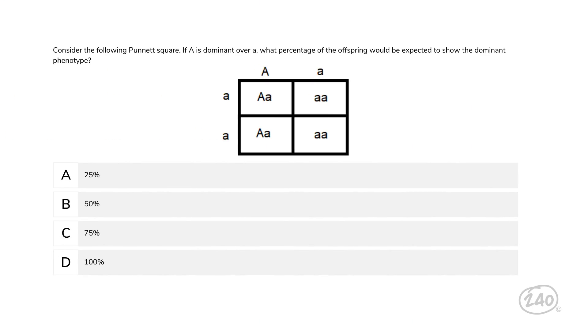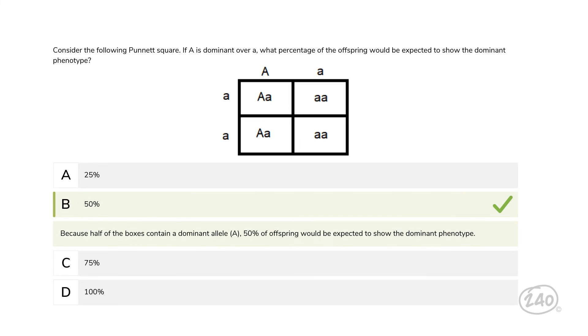Let's move on to life science — specifically genetics. Consider the following Punnett square. If capital A is dominant over lowercase a, what percentage of the offspring would be expected to show the dominant phenotype? Any organism that contains a dominant gene will show the dominant trait. Two of the four boxes here contain a dominant gene, so 50% of offspring would be expected to show the dominant phenotype.